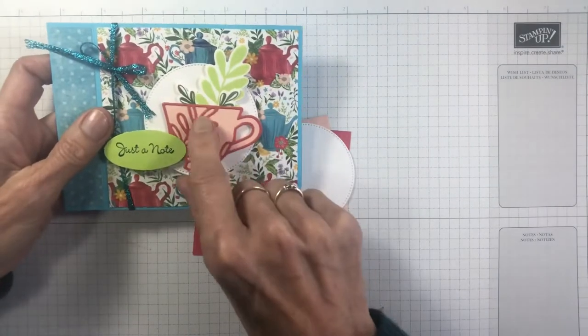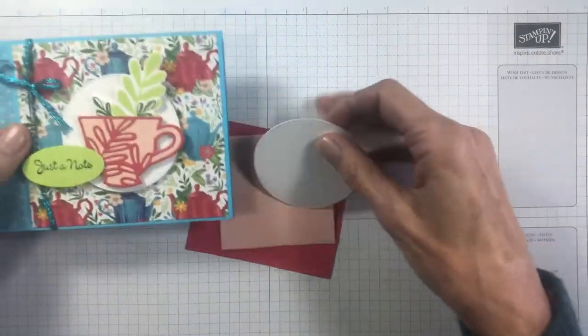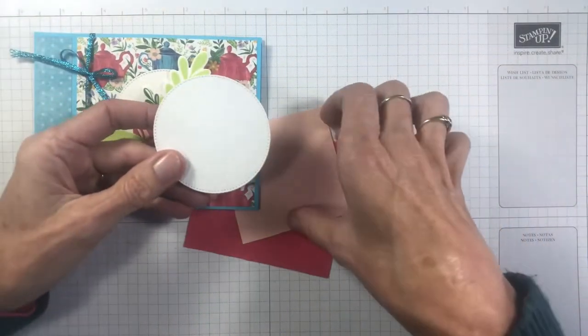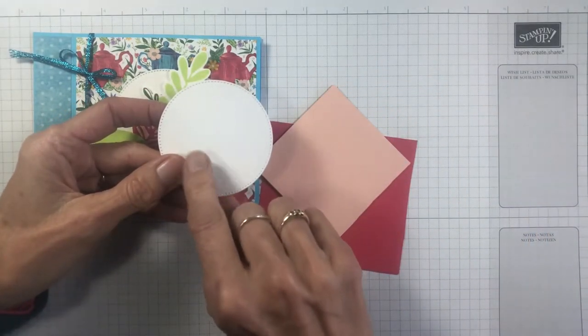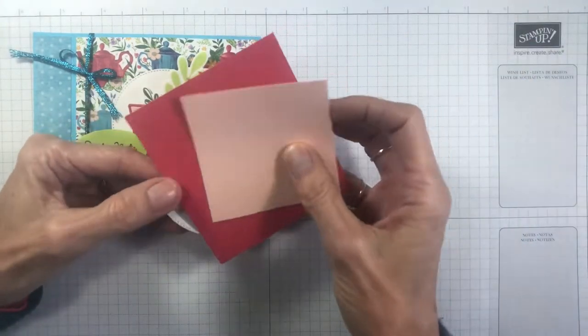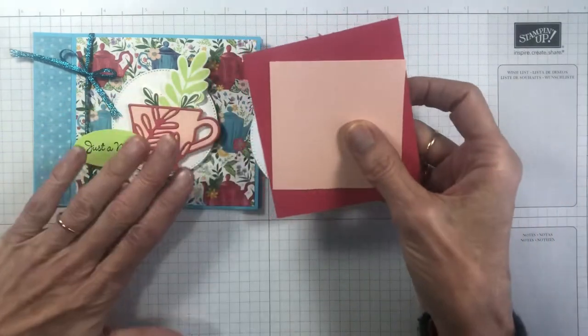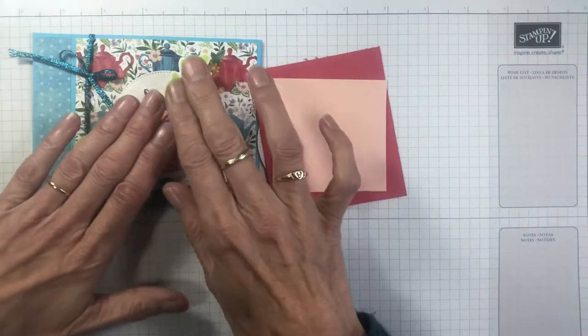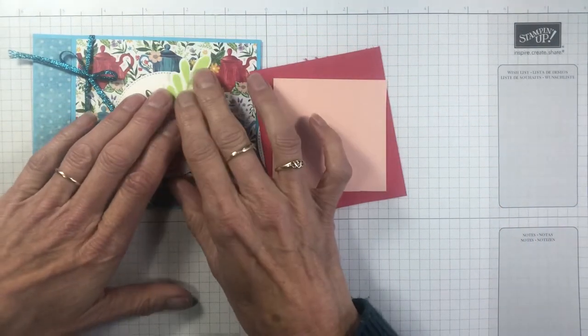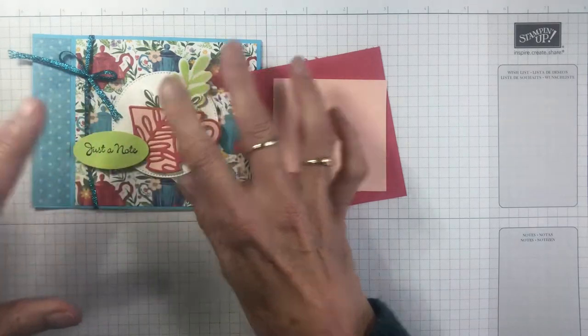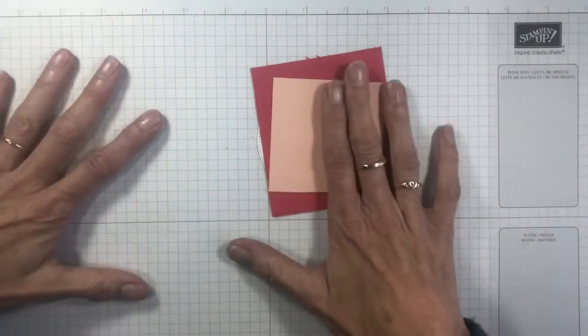And then it's whatever you want to decorate the front. I'm using the Cup of Tea bundle, so I'm using a white die cut circle using the stylish shapes die, and some other pieces for die cutting your cup as well as parts for stamping and sentiment. So let's get started making it.